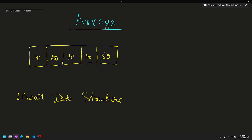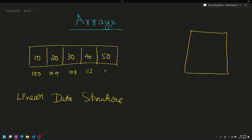The array has an index and an address. The array uses memory. For example, the array starts at memory location 100, where 10 is stored at address 100. This is an integer data type, so the array uses 4 bytes. The next element is at 104, then 108, and so on. The index values are 0, 1, 2, 3, 4.